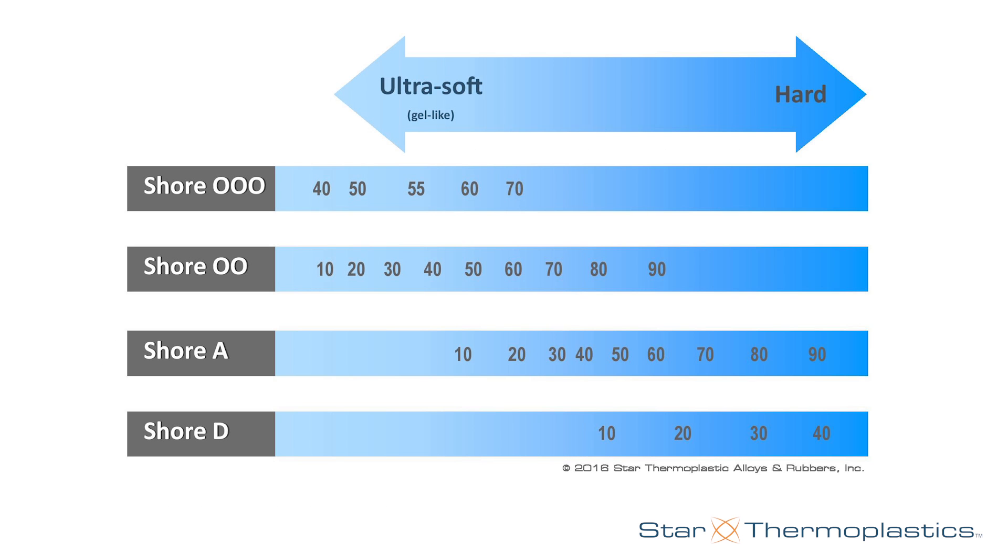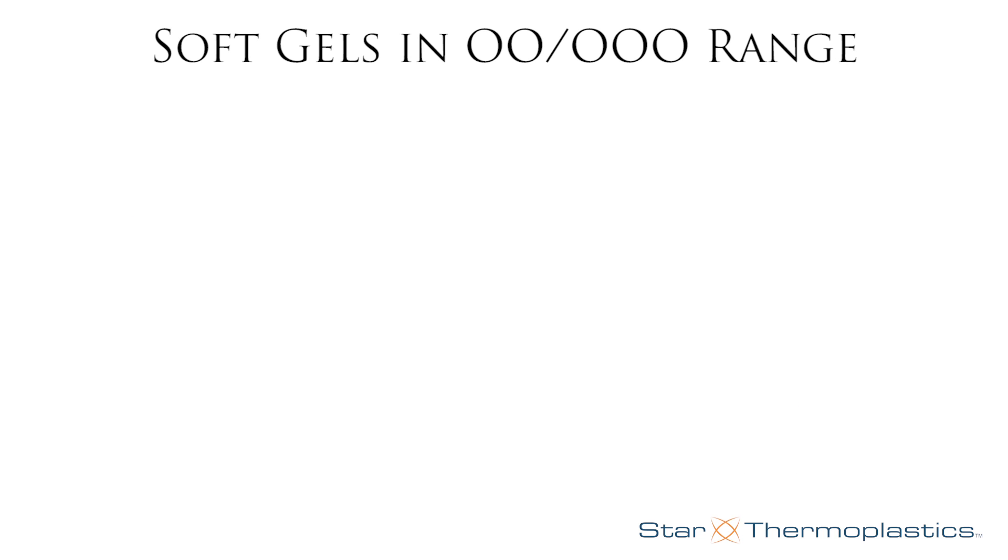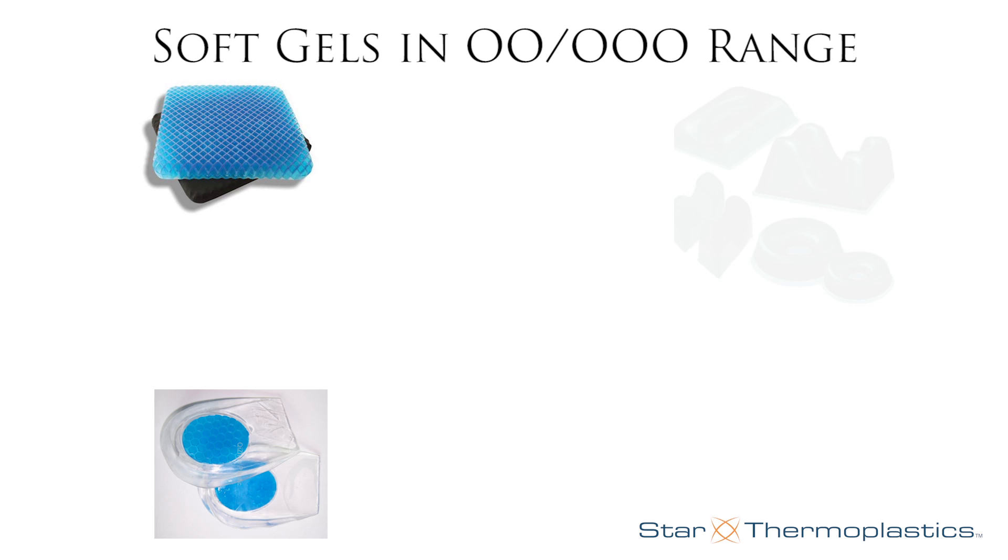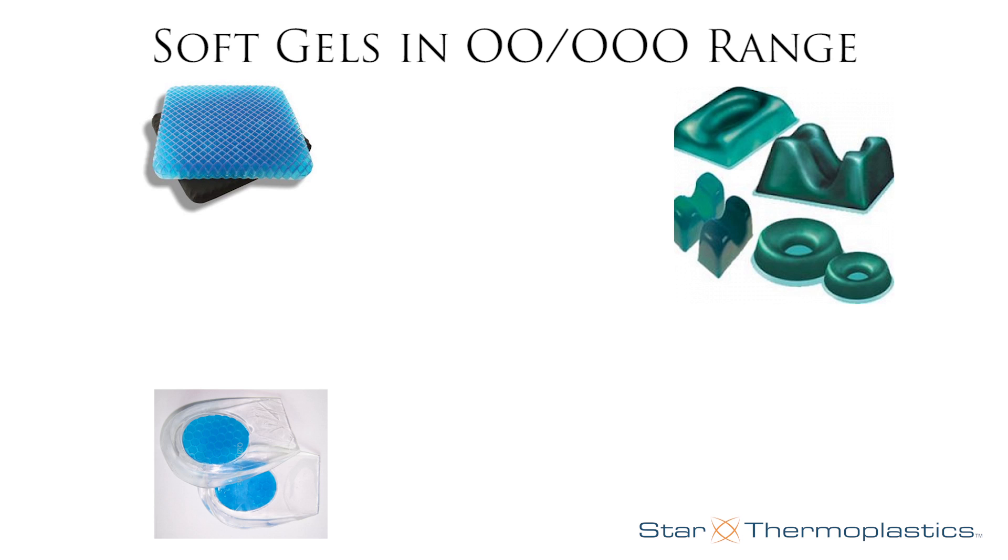Soft gel TPEs fall in the range of Shore double-aught and triple-aught scales. These types of products include seat cushions, shoe inserts, surgical positioners to help doctors get patients in the correct position prior to surgery,